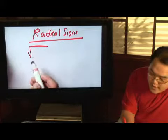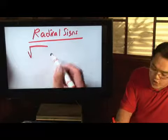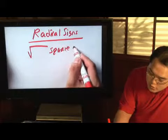There's generally a number inside, but if you don't see a number here, it's always considered to be a square root.